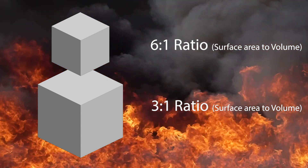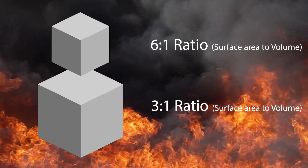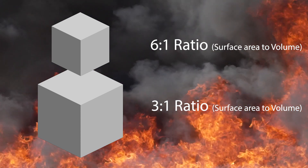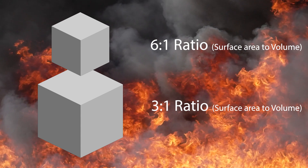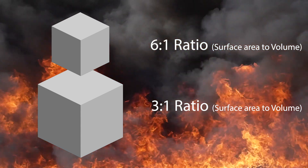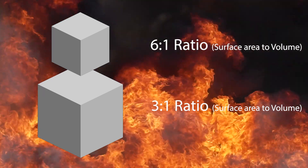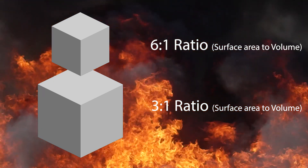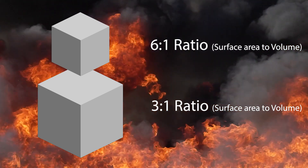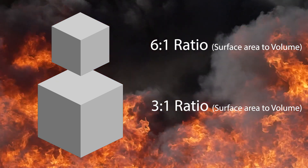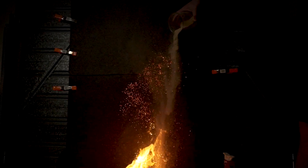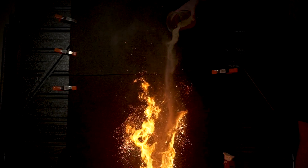When we had a 1cm cube, we had a 6 to 1 ratio — 6cm of surface area available to provide heat to the 1cm of volume. Compared to the larger cube with a 3 to 1 ratio, there is much more heat available to heat up the volume in the smaller fuel size. This can have a really significant effect when we're talking about how a fire is going to interact with its fuels.